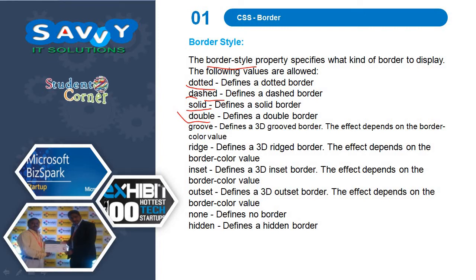Groove defines a 3D grooved border — the effect depends on the border color value. Ridge defines a 3D ridged border — the effect depends on the border color value. Inset defines a 3D inset border — the effect depends on the border color value. None defines no border. Hidden defines a hidden border.